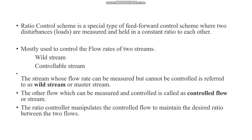What is meant by wild stream and what is meant by controllable stream? The wild stream means the stream whose flow rate can be measured but cannot be controlled. It is called the wild stream or master stream. The other stream is called the control stream or controllable flow.